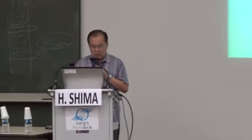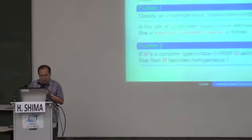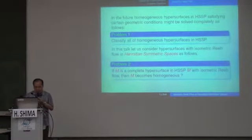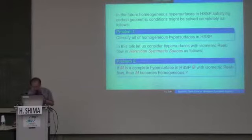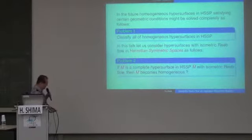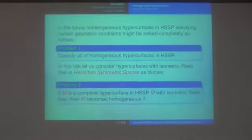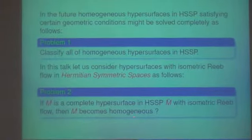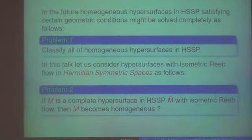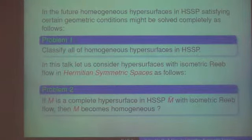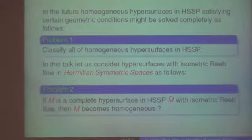So we have to consider: M is a complete hypersurface in Hermitian symmetric space with isometric Reeb flow. What can you say — should M be homogeneous? For many spaces, in the latter part of the 20th century, many differential geometers have solved this kind of problem and have proved that these hypersurfaces are homogeneous.